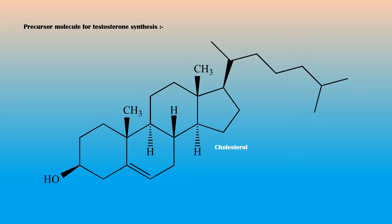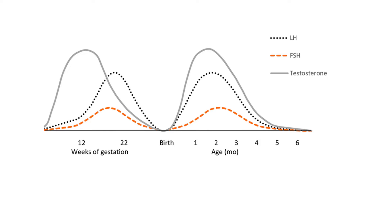The precursor molecule for testosterone synthesis is cholesterol. Testosterone secretion is high during the first months of life and gradually declines afterwards. During the puberty of a male child, the secretion of testosterone rises again and continues throughout life.